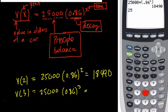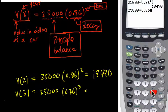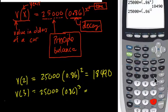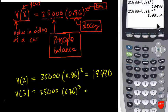Then I take 25,000, and I multiply by 0.86 to the third power. Oops, I don't know if that parentheses will cause an issue, let's see if it does. Oh, it didn't matter, didn't matter.